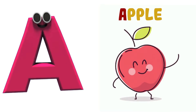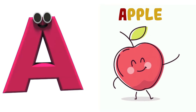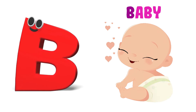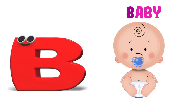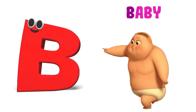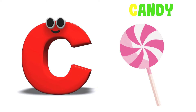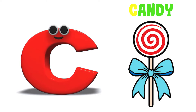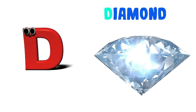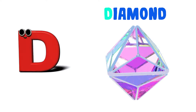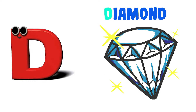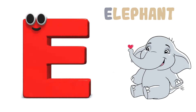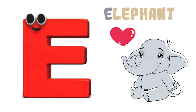A is for Apple. A-A-Apple, A-A-Apple, A-Apple. B is for Baby. B-B-Baby, B-B-Baby, B-Baby. C is for Candy. C-C-Candy, C-C-Candy, C-Candy. D is for Diamond. D-D-Diamond, D-D-Diamond, D-Diamond. E is for Elephant. E-E-Elephant, E-Elephant, E-Elephant.